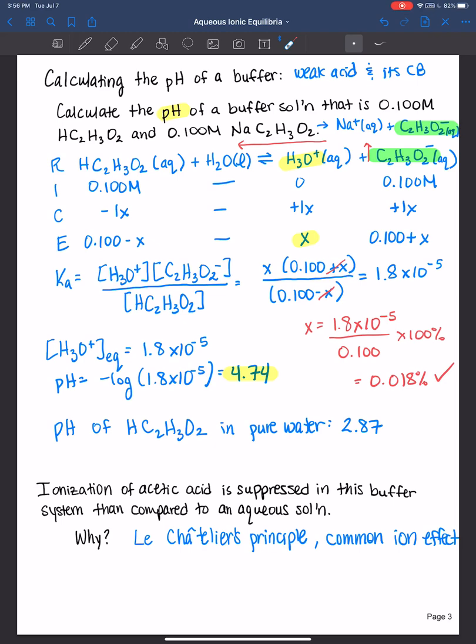principle and therefore prevented our reactant, in this case acetic acid, from ionizing or going forward. And that's why the pH of the buffer system is higher than the pH if it was just in pure water alone.